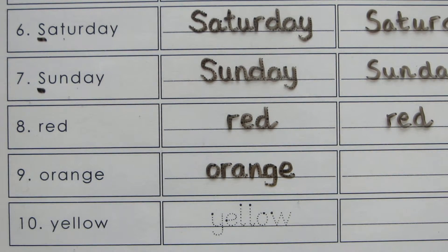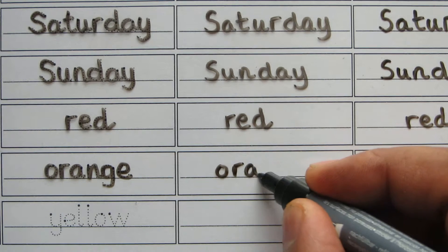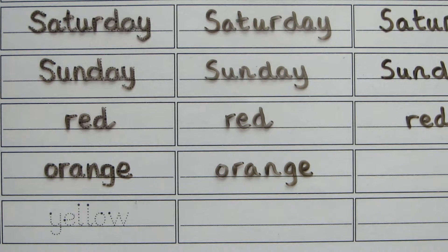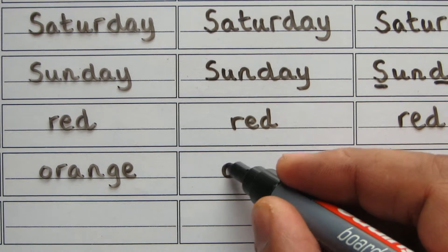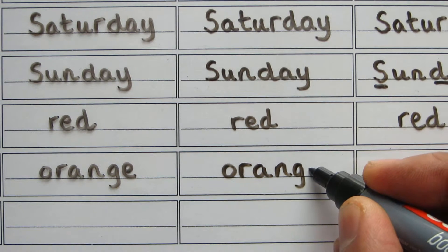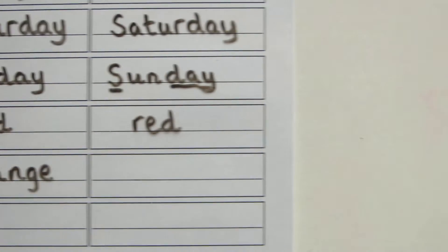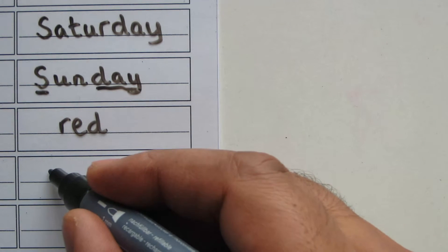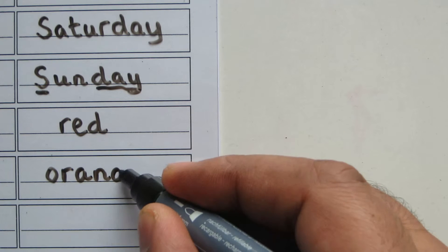The ninth word on this sheet is Orange. O-R-A-N-G-E, Orange. So let's start: O-R-A-N-G-E, Orange. On to the next box: Orange. O-R-A-N-G-E, Orange. On to the third box: Orange. O-R-A-N-G-E, Orange. On to the last box without looking: Orange. O-R-A-N-G-E, Orange.